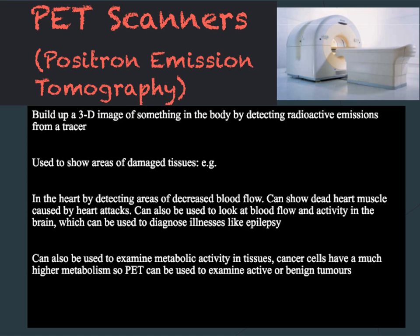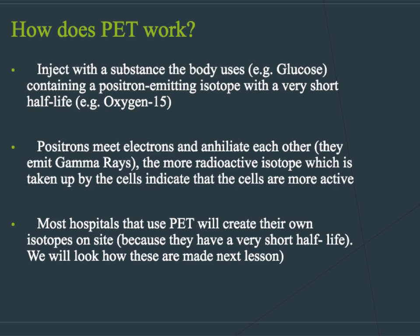So how does PET work? To carry out PET you inject the patient with a substance the body uses, for example glucose. The positron-emitting isotope will have a very short half-life — in glucose you might use something like oxygen-15. The positrons released during this decay then meet electrons and annihilate each other, causing them to emit gamma rays. The more radioactive isotope taken up by cells indicates those cells are more active.